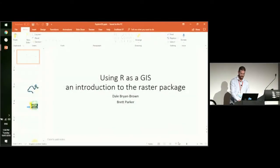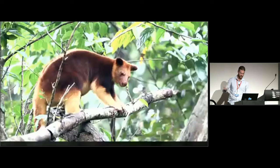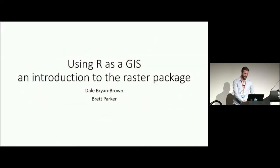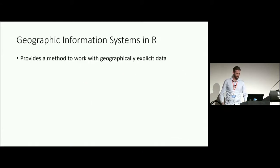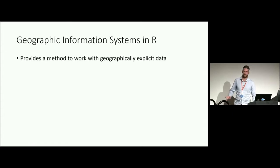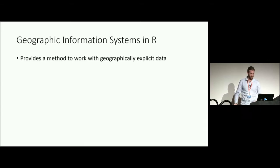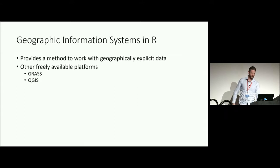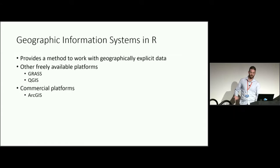Just a little introduction to using R as a GIS with the Raster package. A geographic information system is not a software — it's a system of organizing information that provides a method to work with geographic data. There are a few freely available platforms, including GRASS and QGIS, and I'll look at QGIS a little bit later. There are also commercial platforms like ArcGIS.